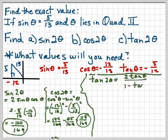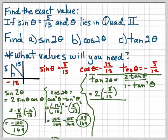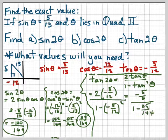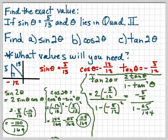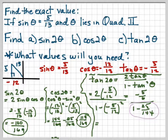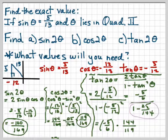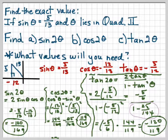For tangent of 2θ, that's 2 tangent θ over 1 minus tangent squared θ, and tangent θ is −5/12. So: 2 times (−5/12) over 1 minus (−5/12)² gives us −5/6 over 1 minus 25/144. The denominator becomes 144 minus 25 over 144, which is 119/144. Flipping that upside down using keep-change-flip, we get −5/6 times 144/119, which equals −120/119. Go do checkpoint number 1.